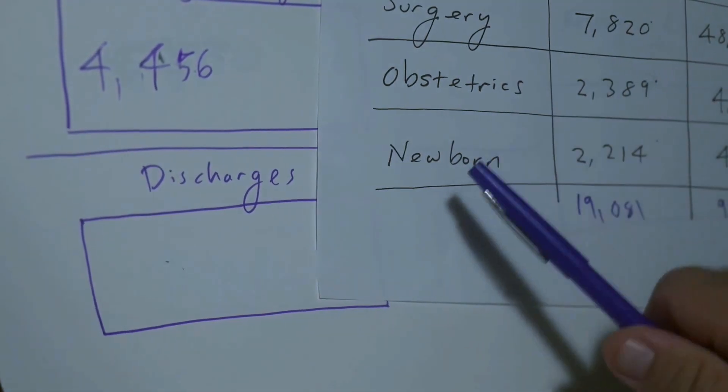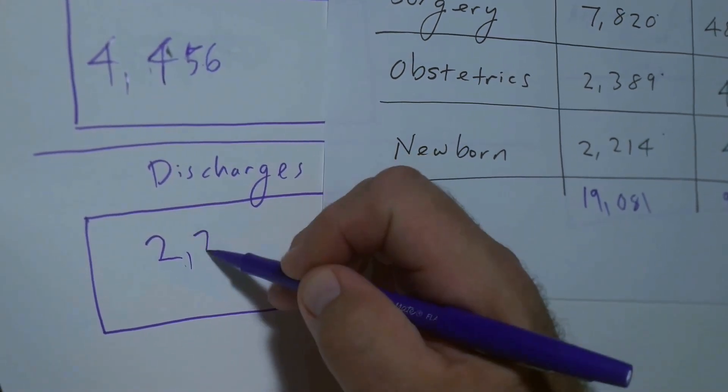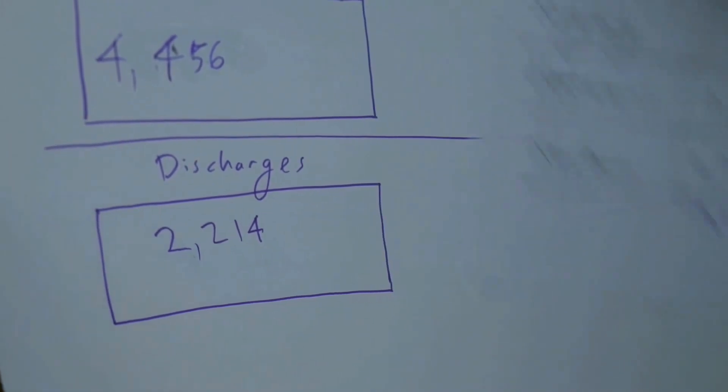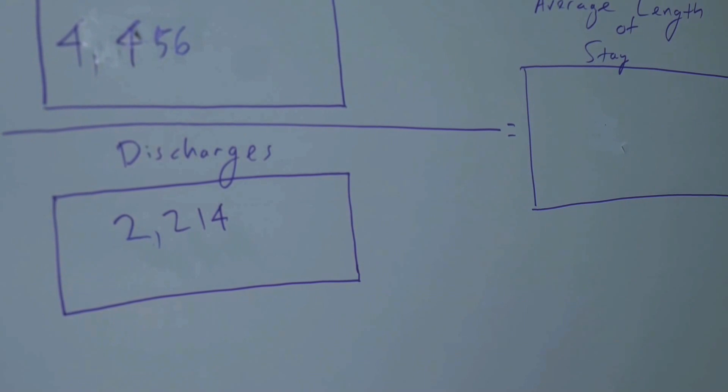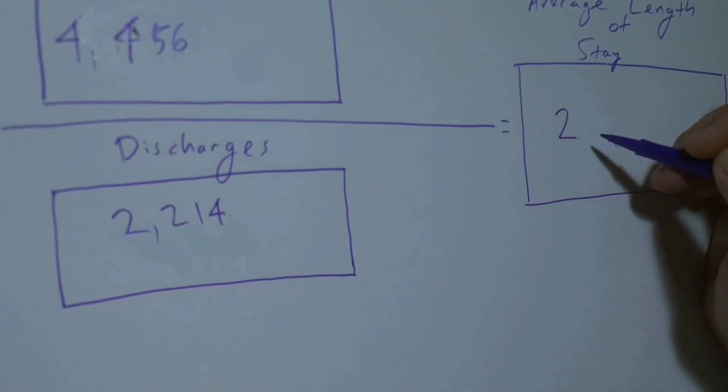The number of discharges for newborns is 2,214. If I divide the 4,456 by the 2,214, I get approximately 2. So the stay length is 2 days.